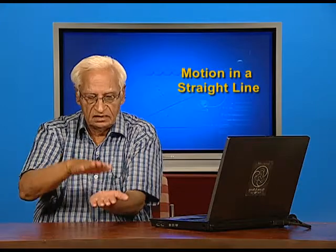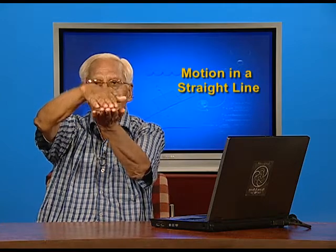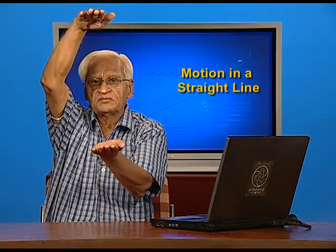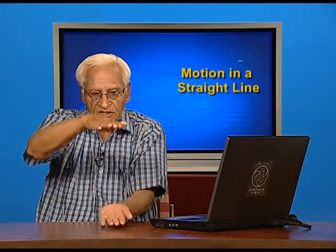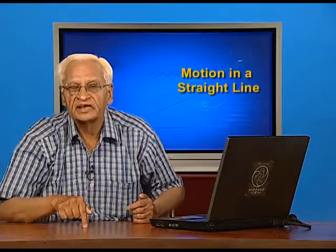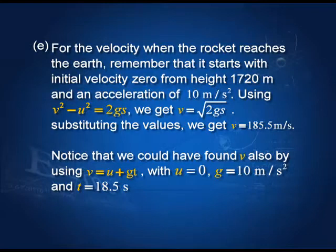To summarize: the rocket goes up 1000 m on its engines in 10 seconds, then continues 720 m further in 12 seconds where its velocity becomes 0, then takes 18.5 seconds to cover the total distance to the ground, giving a total time of 40.5 seconds. For the final velocity when it reaches the ground, we use v² − u² = 2gs with all values known, and the velocity when it hits the ground is 185.5 m/s.